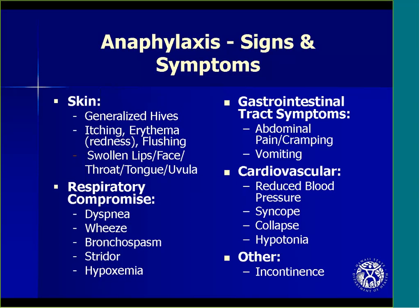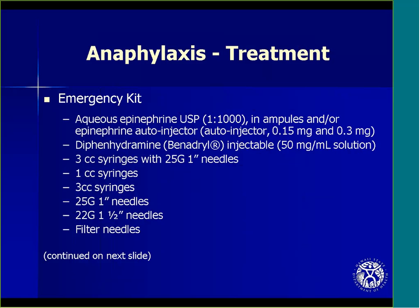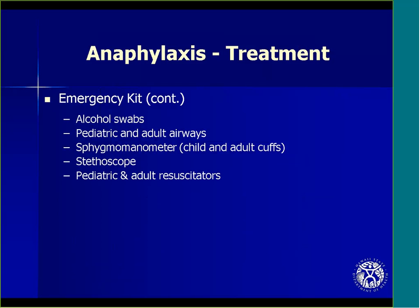Every clinic must have an emergency kit containing epinephrine — both autoinjectors and aqueous epinephrine in ampoules — diphenhydramine, and supplies for administering medications including filter needles for drawing epinephrine from the glass ampoules. The emergency kit should also contain child and adult blood pressure cuffs, a stethoscope, and pediatric and adult resuscitators.